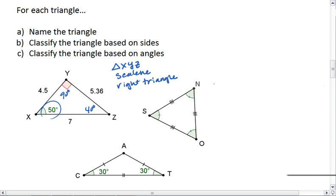Okay, for our next one, a possible name is triangle SNO. Looking at sides, we have three congruent sides as evidenced by these three tick marks, making this triangle an equilateral triangle. We also notice that we have three congruent angles, as evidenced again by tick marks, making the triangle also equiangular.